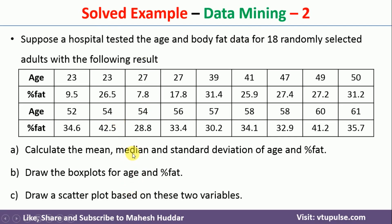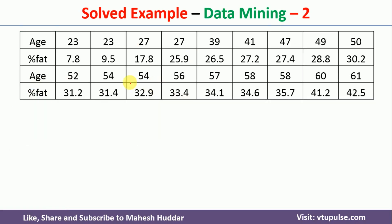If you want to find the median, interquartile range, and quartiles, the data has to be arranged in increasing order. If you look at the age column, it is already arranged in increasing order, but when you look at the fat column, the data is not arranged in increasing order. So the first thing we need to do is arrange this data in increasing order, which I have done here. Now the data is arranged in increasing order for both age and fat.